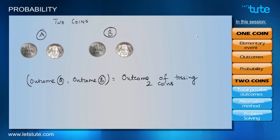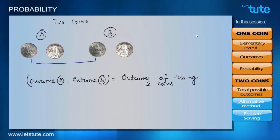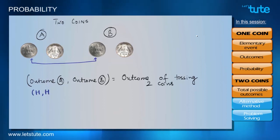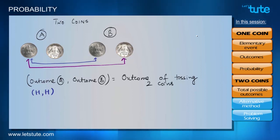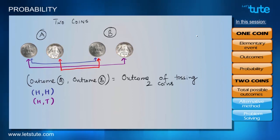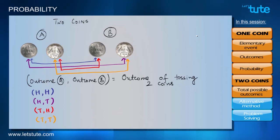Upon the first toss we get heads on both coins — H, H. Upon the second toss we get heads from coin A and tails from coin B — H, T. We can similarly write all possible outcomes. You can try tossing two coins and you will see there are only four possible outcomes.